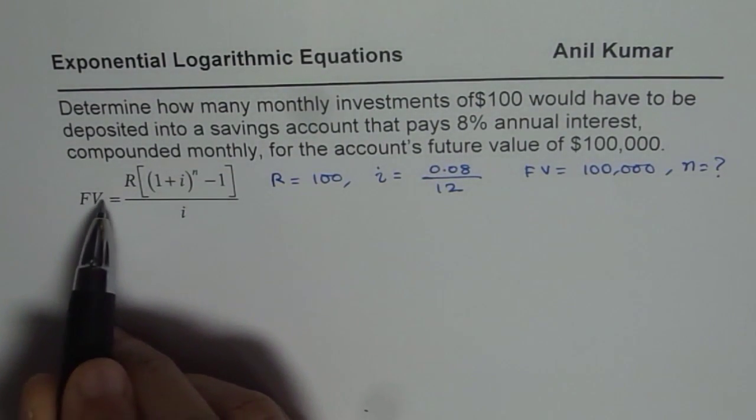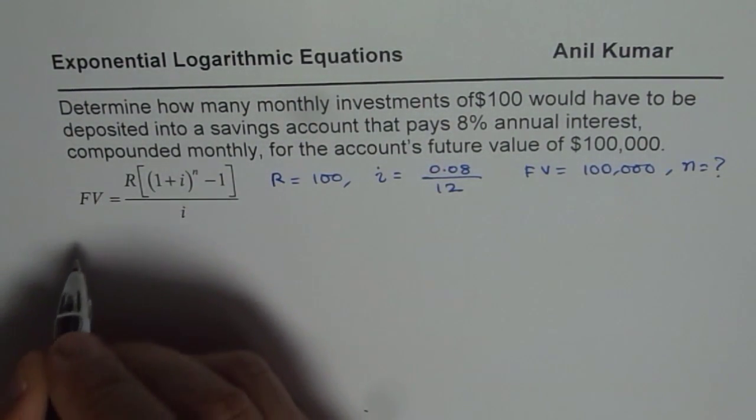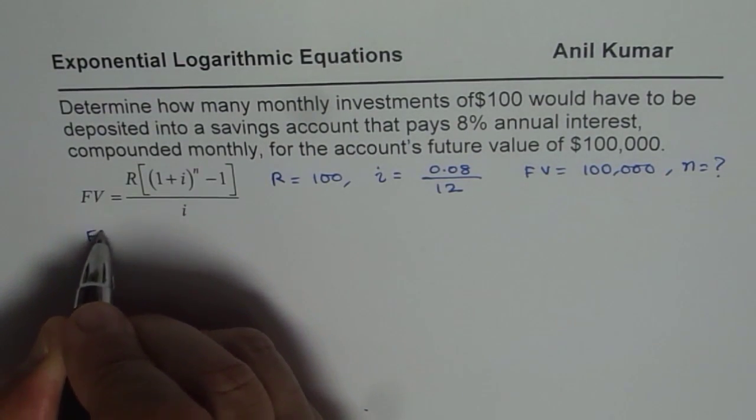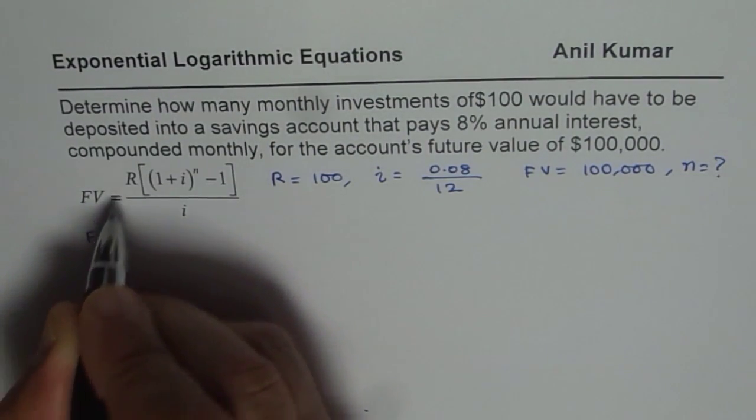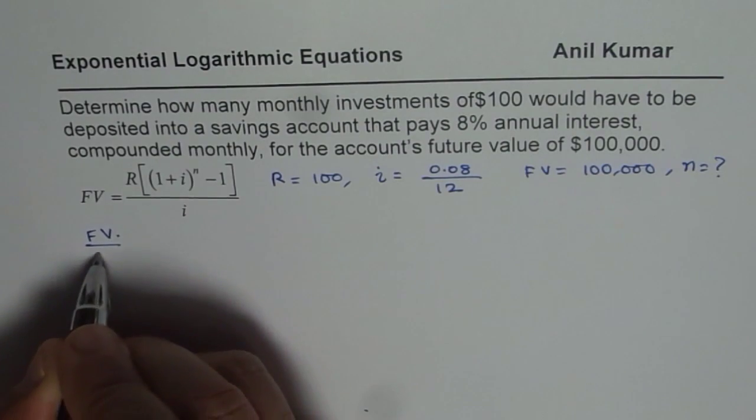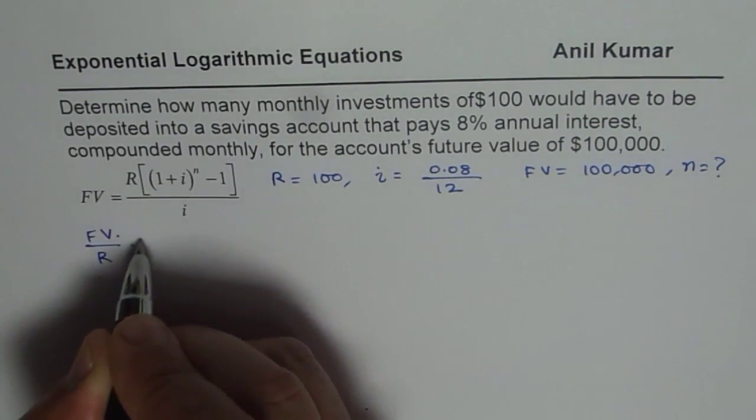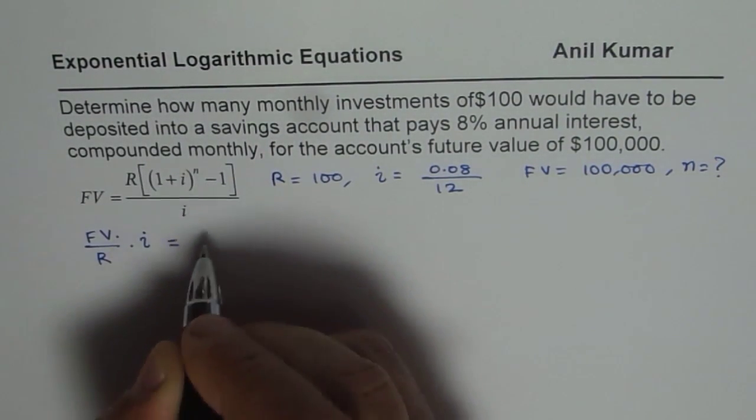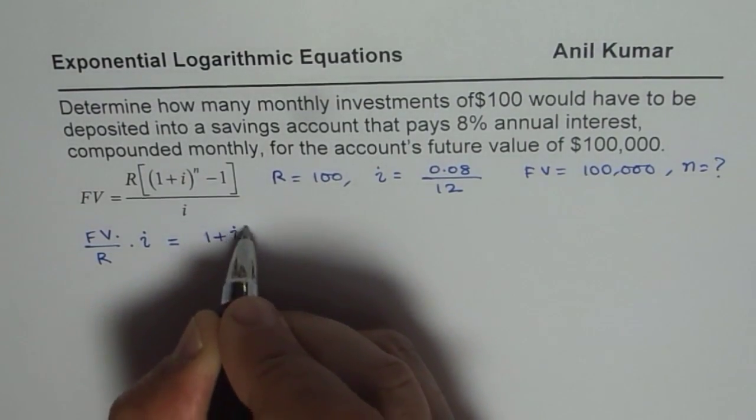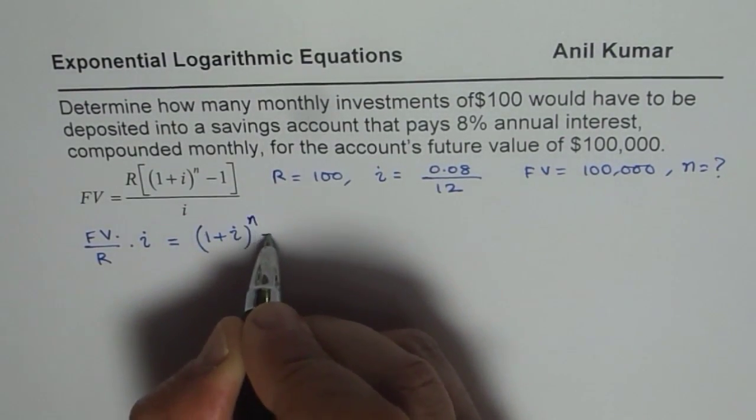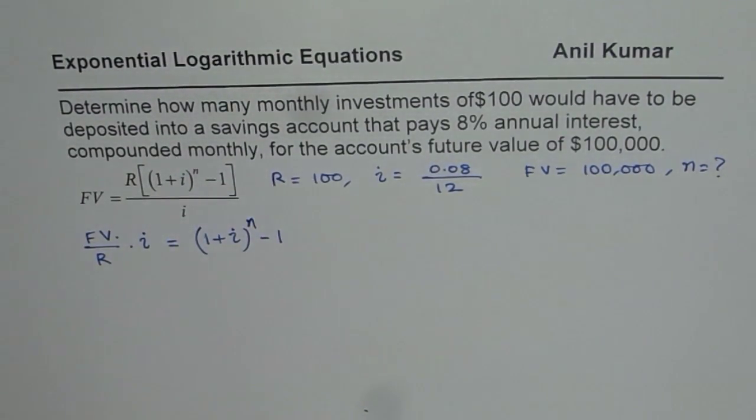The steps involved: future value could be multiplied by i and divided by R. So the first step is FV times i divided by R equals (1+i)^n - 1. So that could be your first step.